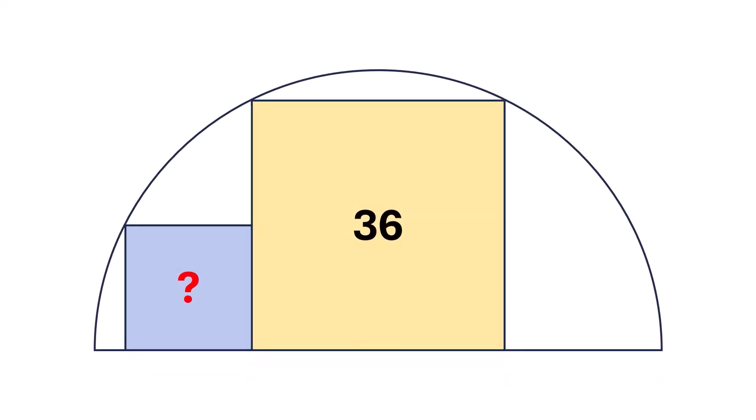Can you solve this geometry challenge? We have a semicircle. Inside it, there is a large square, as shown in the figure. The area of this square is 36 square units. To the left of it, there's a smaller square, touching both the large square and the arc of the semicircle.